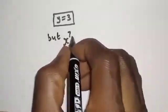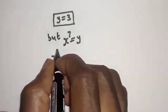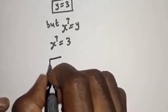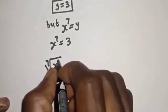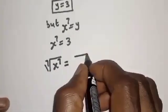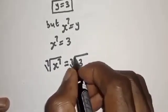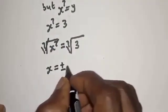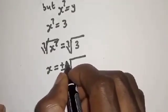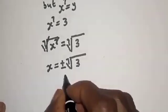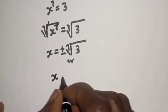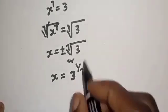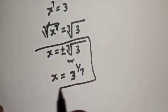The only valid solution is y equals 3. Since s raised to power 7 equals y, we have s raised to power 7 equals 3. Taking the 7th root of both sides, the 7th root of s raised to power 7 equals the 7th root of 3. Therefore, s equals plus or minus the 7th root of 3, or equivalently s equals 3 raised to power 1 over 7. This is the final answer.